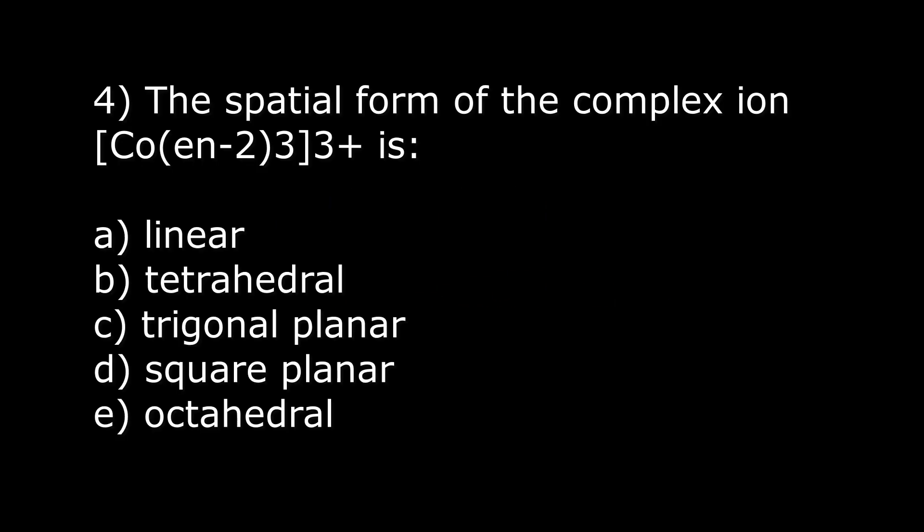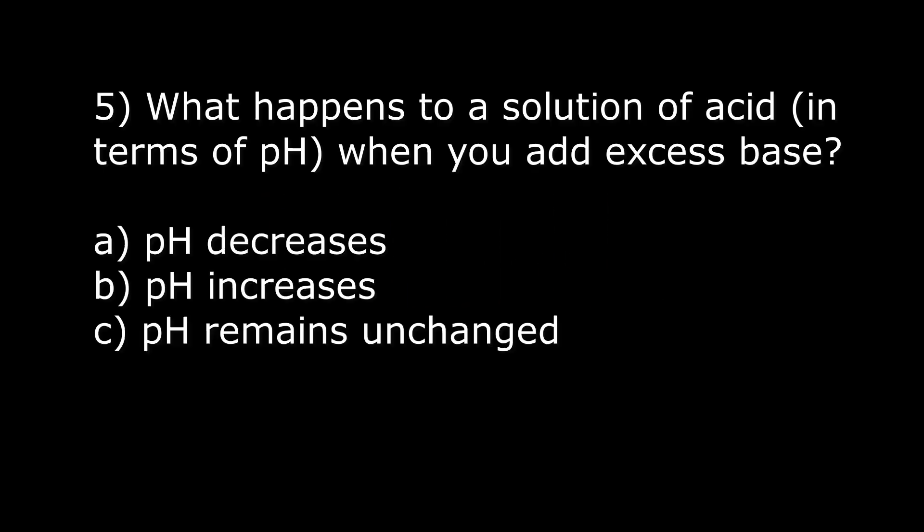The next question, number four: the spatial form of the complex ion cobalt and ethylene diamine is: a) linear, b) tetrahedral, c) trigonal planar, d) square planar, or e) octahedral. The answer is c, trigonal planar, because we have three ligands.